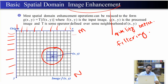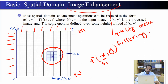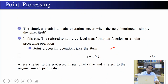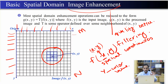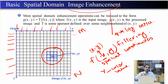अगर हम mathematically बात करें तो image is a function of two variables x and y. यहाँ x जो है वो spatial coordinates हैं — x direction और y direction — और बड़ा Y जो है वो color की value है। जब हम grayscale की बात करते हैं तो color की range 0 से 255 के दरमयान होती है। तो image = f(x, y) जहाँ x spatial coordinates हैं और Y color value है।